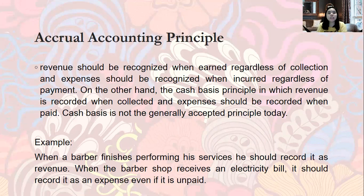On the other hand, the Cash Basis Principle records revenue when cash is collected and expenses when they are paid in cash. Cash basis is not the generally accepted principle today. For example, if you ordered office supplies in December 2019 but paid for them in January 2020, under cash basis you would record the expense in 2020 — even though you used the supplies in 2019. This mismatches expenses with the period they actually belong to.